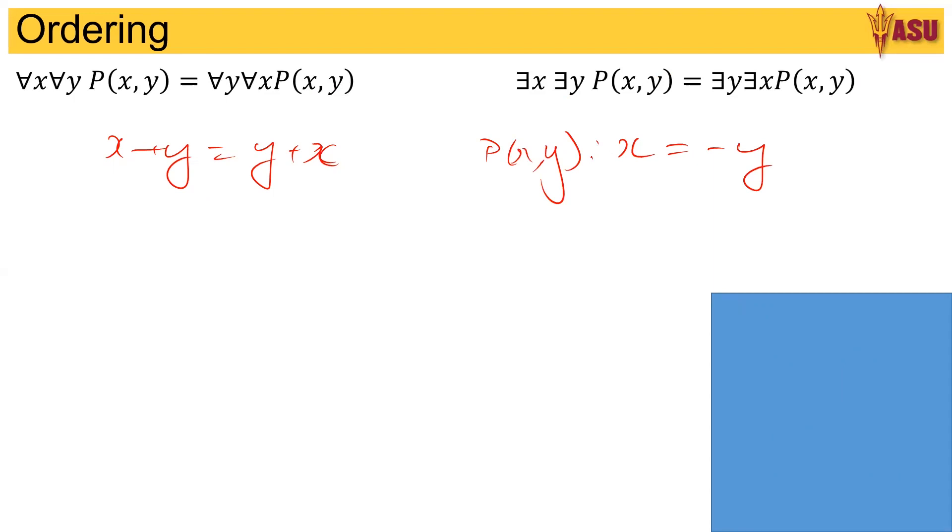So P(x,y) is defined as x equals minus y. So given any integer x belongs to integers, so x equals 5, then there exists an integer y equal to minus 5. And similarly, y equals minus x. So very clearly the ordering of for all and there exists matter, unless it is commutable in this manner.